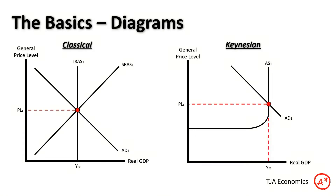On the right-hand side we've got our Keynesian diagram with AS and AD intersecting for PL1 and YFE. Both of these diagrams share the idea of full employment, where all resources — all factors of production: land, labour, and capital — are being fully used, i.e. there's no unemployed labour and no unused buildings, etc.